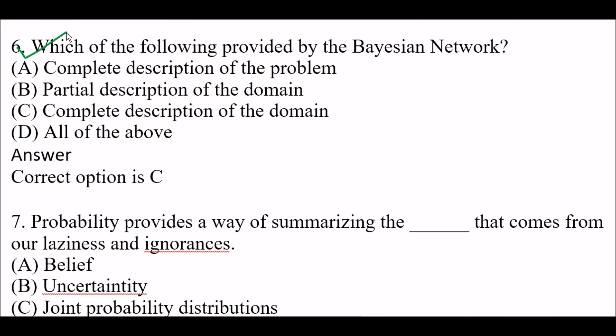Next question: Which of the following is provided by the Bayes network? Option A: Complete description of the problem, Option B: Partial description of the domain, Option C: Complete description of the domain, Option D: All of the above. Right answer is Option C — complete description of the domain.